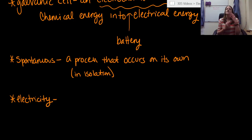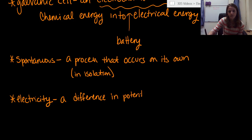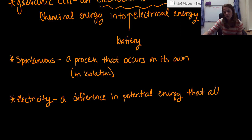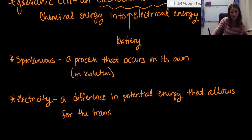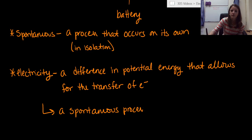The last thing I want to define is what electricity actually is, in the context of electron transfer, specifically in a battery. Electricity is basically, in the most simplistic terms, a difference in potential energy that allows for the transfer of electrons. This is considered a spontaneous process for a battery.